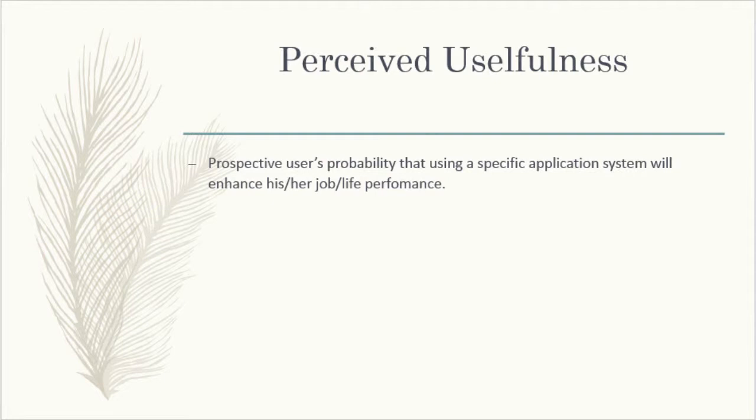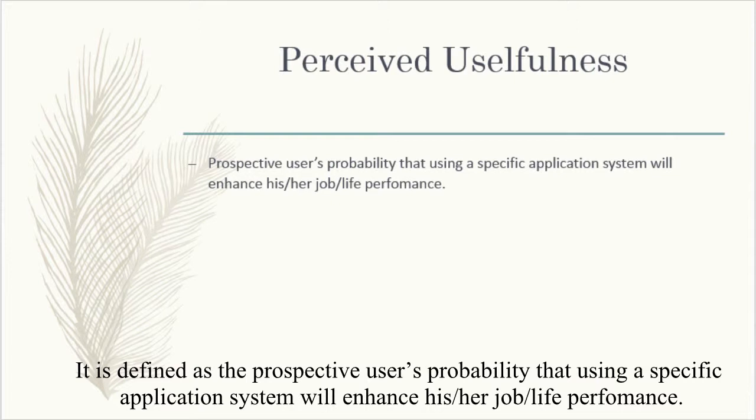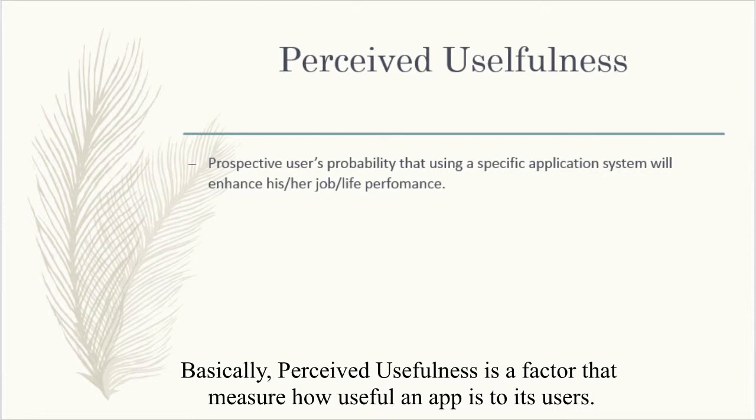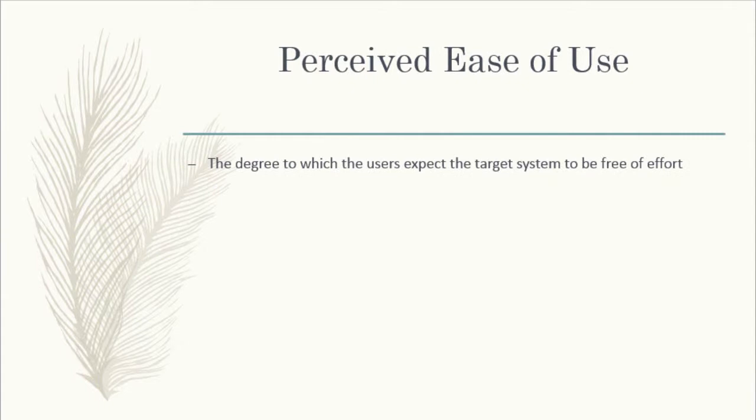These are the variables present in TAM. The first variable is Perceived Usefulness. It is defined as the prospective user's probability that using a specific application system will enhance his or her job or life performance. Basically, Perceived Usefulness is a factor that measures how useful an app is to its user.